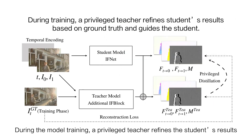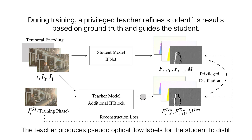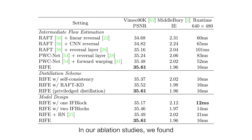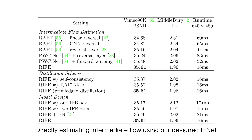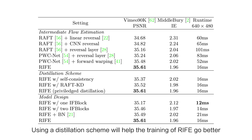During the model training, a privileged teacher refines the student's results based on ground truth and guides the student. The teacher produces pseudo-optical flow labels for students to distill. In our ablation studies, we found directly estimating intermediate flow using our designed IFNet can be better than some flow reversal methods. Using a distillation scheme will help the training of RIFE go better.